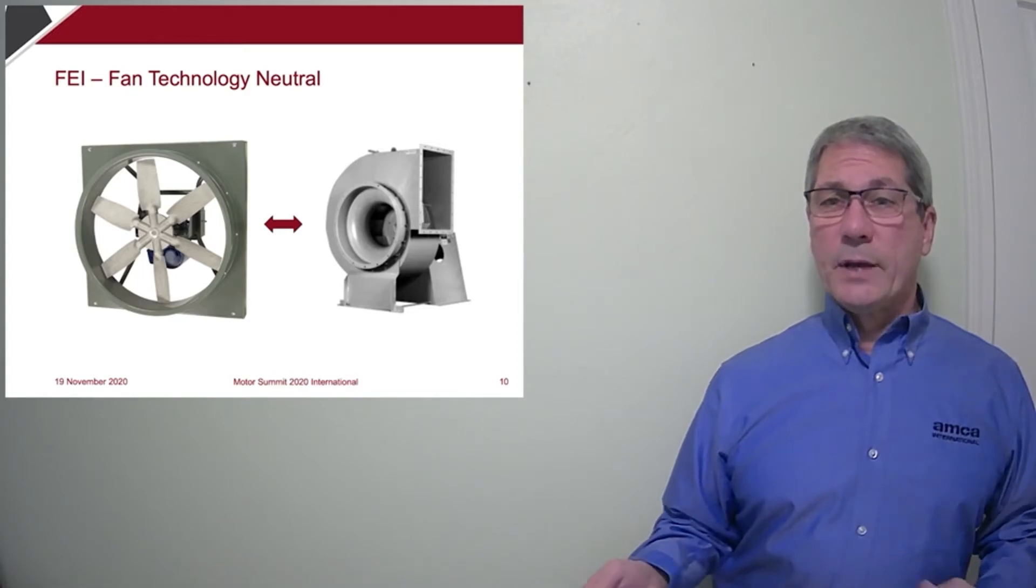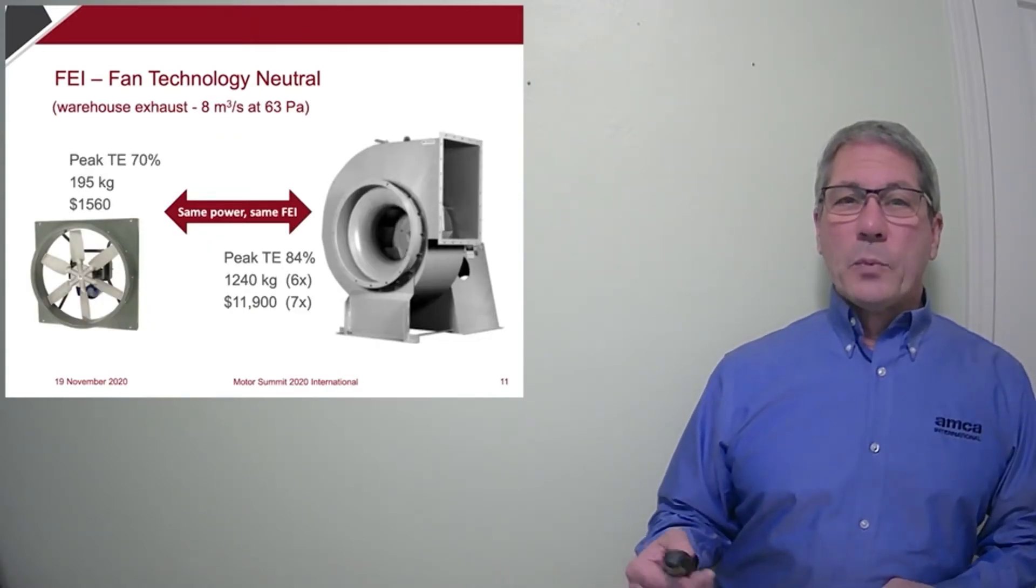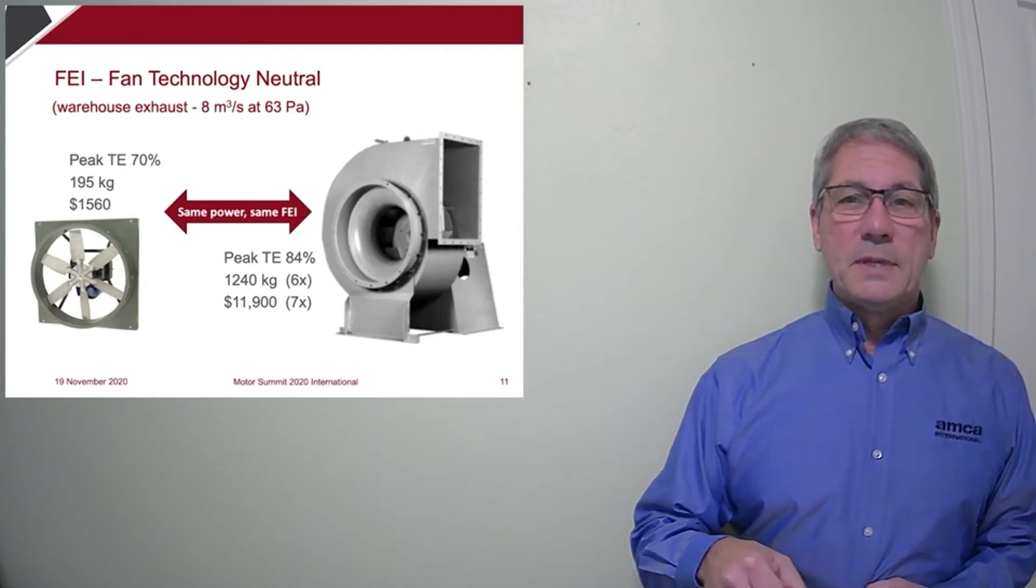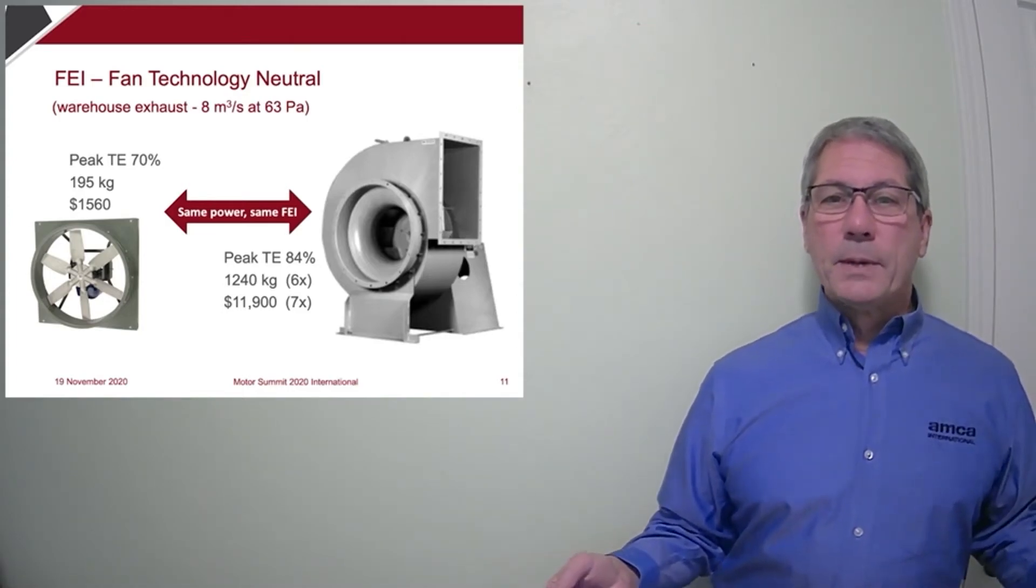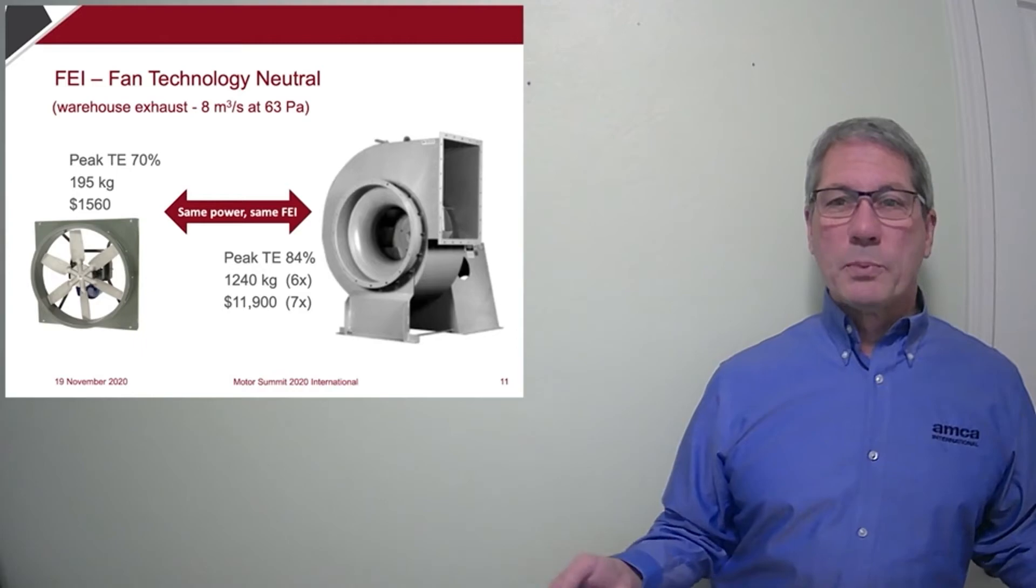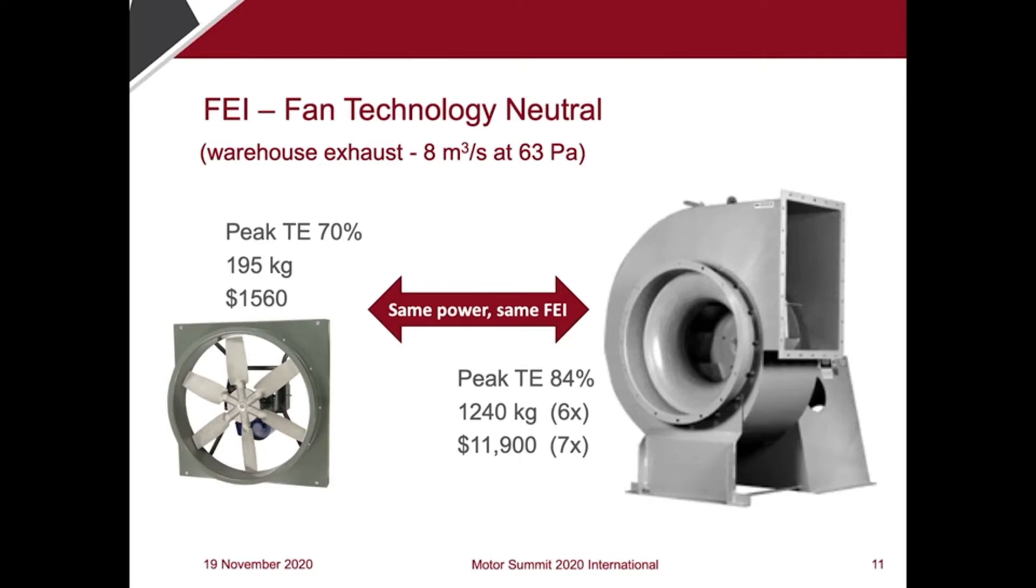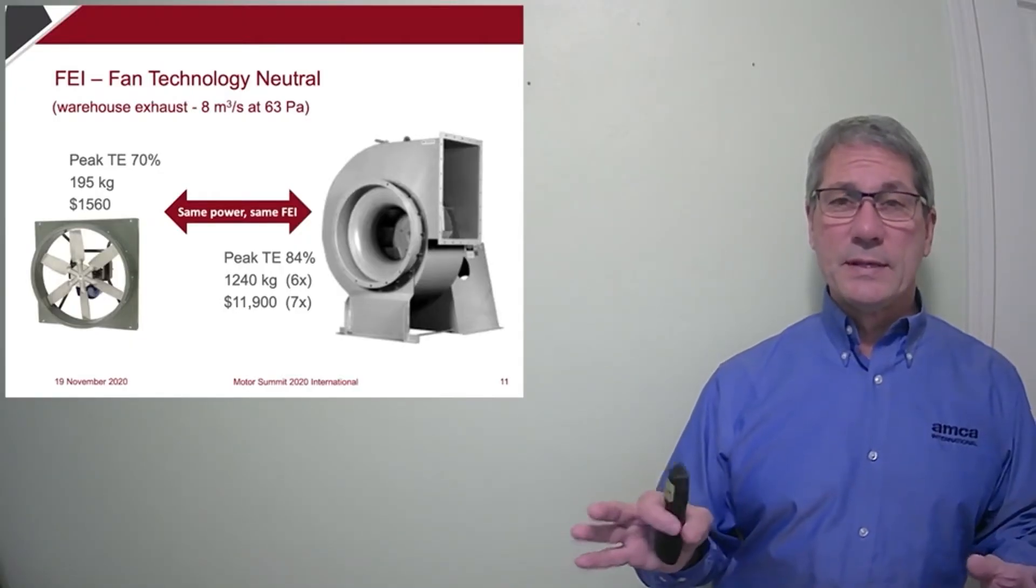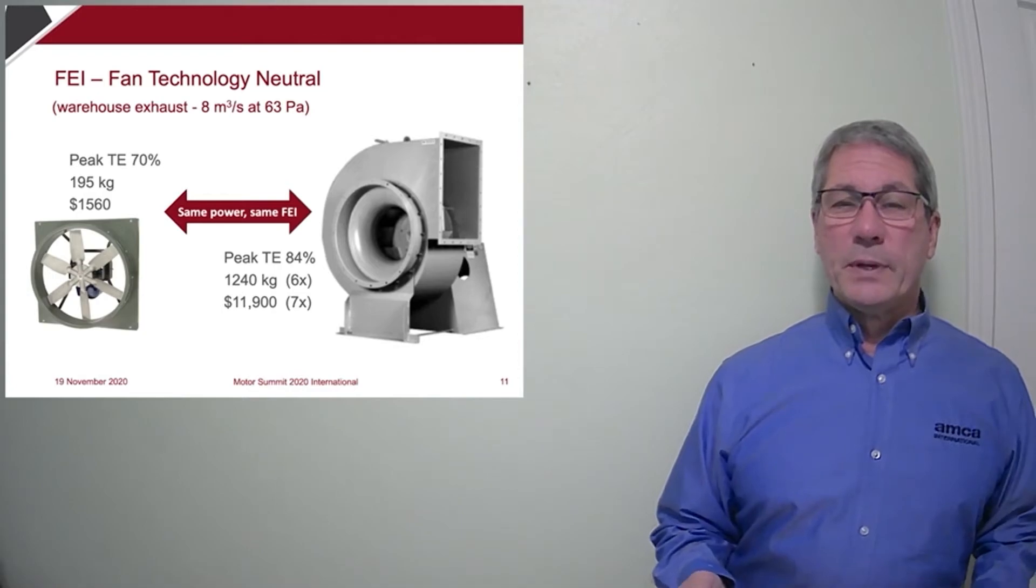The fan with the higher FEI value will have the lower power. But in order for a more efficient product to be substituted, it must actually save energy. An airfoil centrifugal fan is much more efficient than a prop fan. But in a warehouse ventilation application, a low pressure application, the prop fan is the right fan for the job. In order for the airfoil fan to use the same amount of energy and therefore have the same FEI, the size has got to be so large that it would weigh six times that of the prop fan. It would cost seven times as much. And I tried to draw these to scale. FEI is based on consumed power for a given duty point, regardless of the fan type.